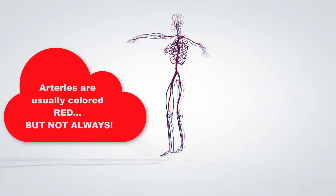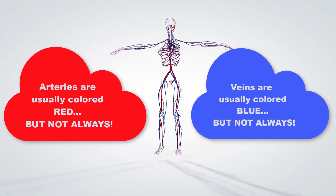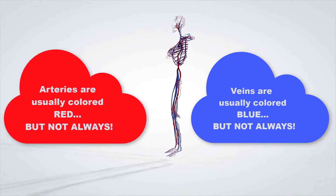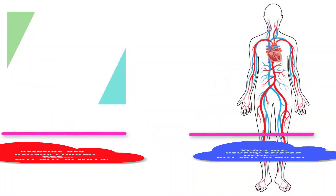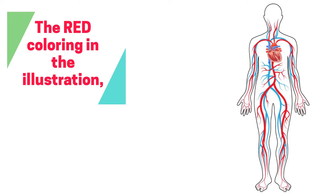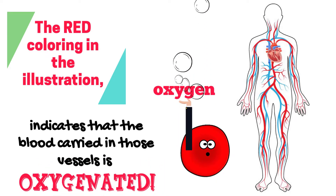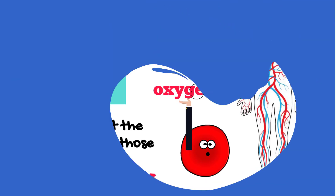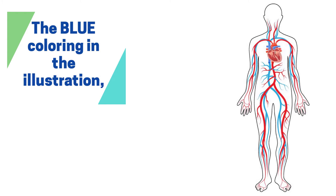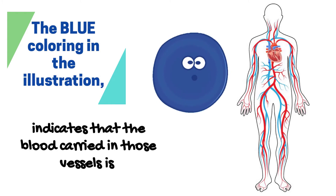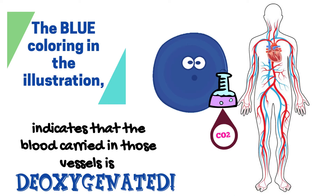Arteries are usually depicted as red and veins are usually depicted as blue on anatomical models and illustrations, but be careful because this is not always the case. The red coloring indicates that the blood carried in those vessels is oxygenated. The blue coloring indicates that the blood carried in those vessels is deoxygenated.